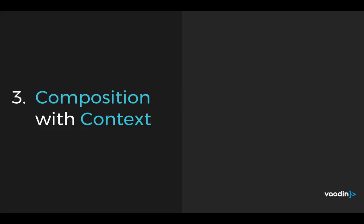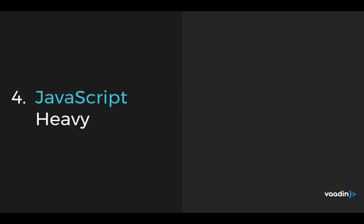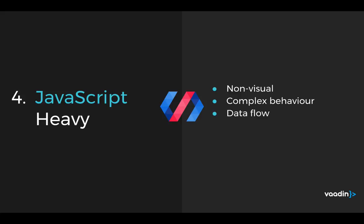But if you have something a little more complicated — something that composes with other elements or depends on the context of surrounding elements — then you could use a Polymer component. These are things like an advanced layout that changes based on where in the page you are, context-sensitive content like navigation or authentication, or an item from a list of items where you're subdividing sections. If what you're doing is particularly JavaScript-heavy, where you need to create and distribute different nodes in JavaScript, it might be good to make a component that contains all the information — both the template and the JavaScript. This is good for non-visual components like authentication or navigation, things with complex behavior like a modifiable layout, and it also helps with data flow, like database management.